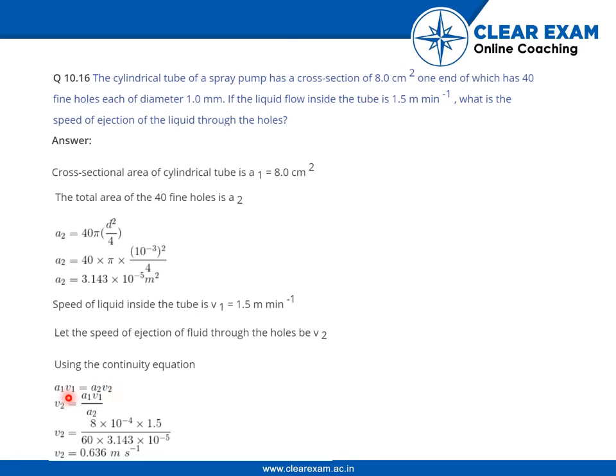We already know the value of a2, a1 and v1. So, by that, with the help of all those values, we can get the value of v2 easily. Put in all those values and eventually we get the v2 to be 0.66 meter per second.